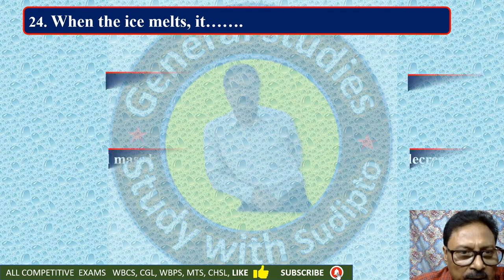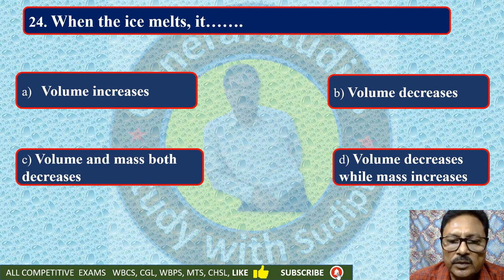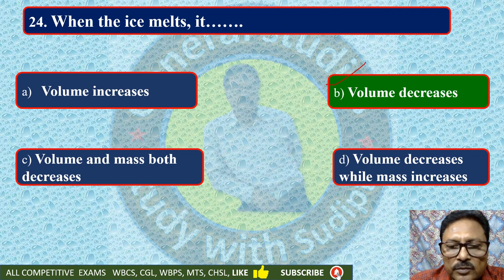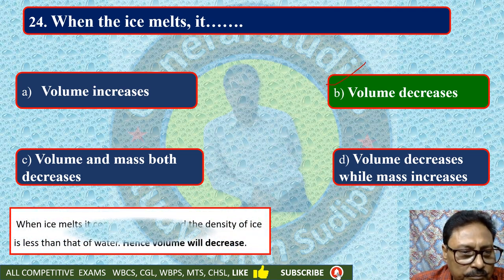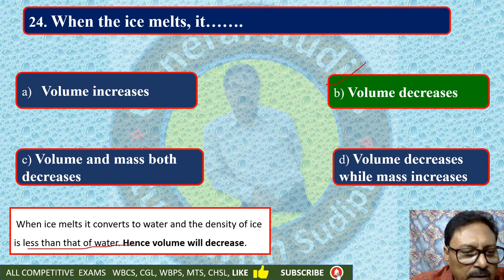When ice melts, its volume — increases, decreases, volume and mass both decrease, or volume decreases while mass increases. The volume decreases when ice melts into water. When ice melts, it converts to water, and the density of ice is less than that of water. Hence, the volume decreases.